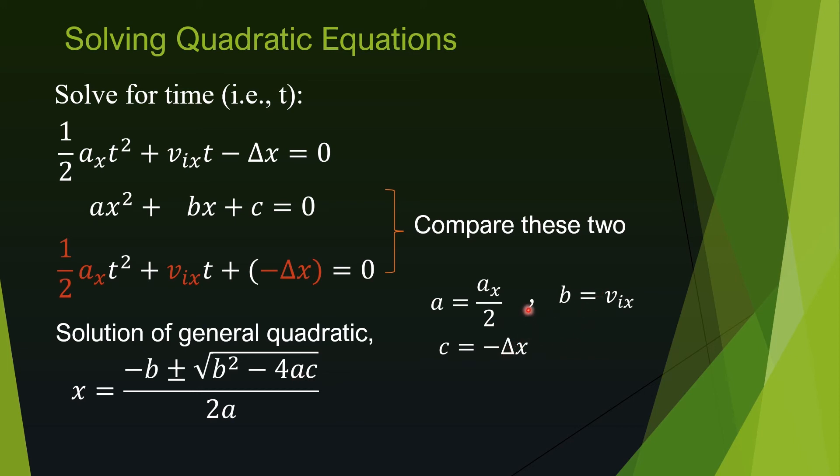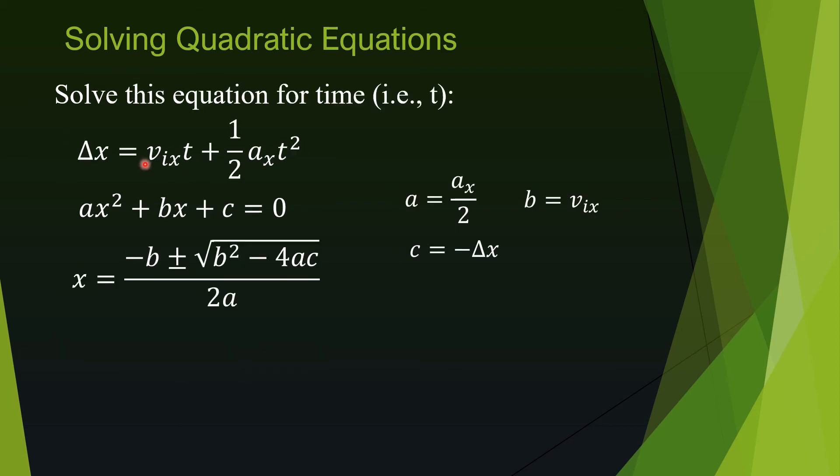Now we have our a, b, c, so we can substitute these into this equation to get t. Our equation, quadratic equation, and its solution here. And I have also listed the coefficients. Once you get used to it, you can directly look at this equation and figure out what the coefficients are, and then plug those coefficients in this formula to solve problems like this.